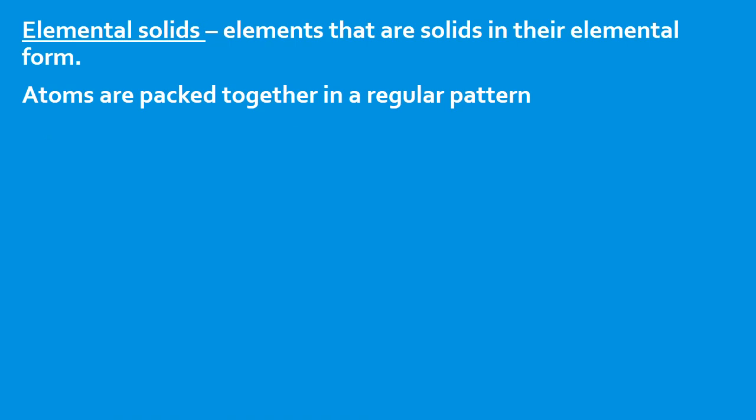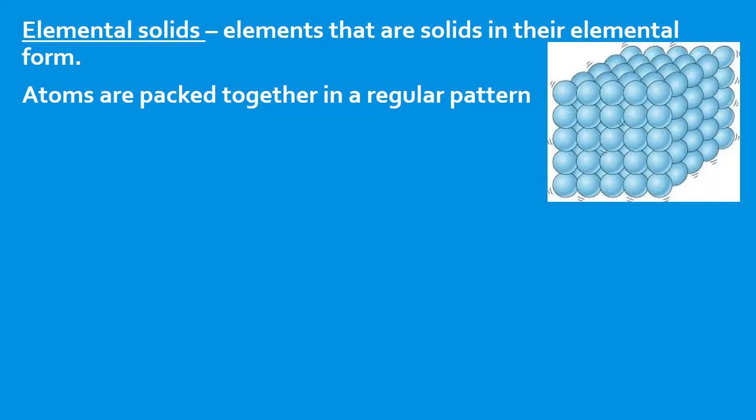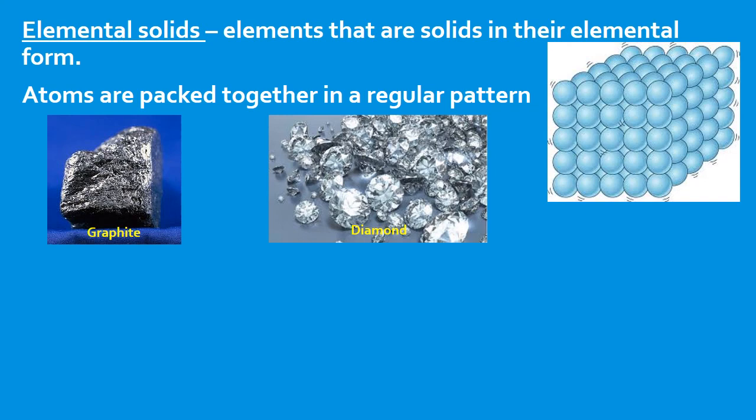Elemental solids are solids in their natural form, and the atoms are packed in a regular or repeating pattern. Now the arrangement of the atoms can affect the properties of a solid.